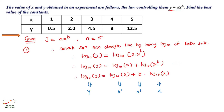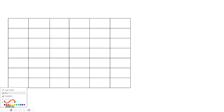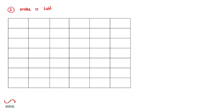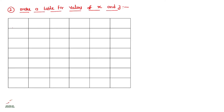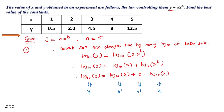Step one — converting the equation into straight line form — is the important step, as mentioned last time. Step two is to make a table for the values of capital X and capital Y. We write all the x values and y values, and then we need to compute capital X and capital Y.